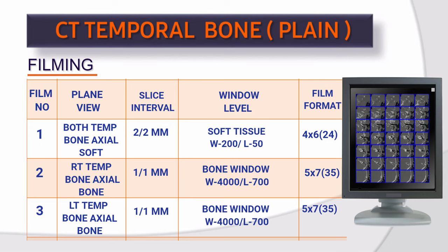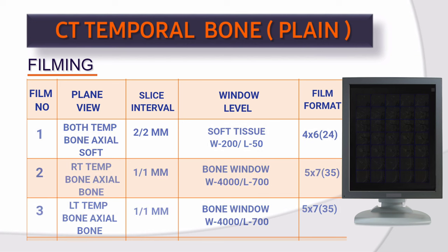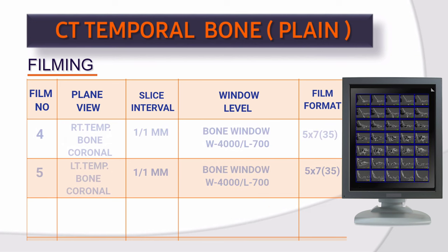Film 3: Plain view, left temporal bone axial bone. Slice interval 1×1 mm. Window level: bone — window width 4000, window level 700. Film format: 5×7, 35 images.